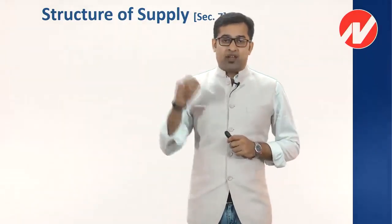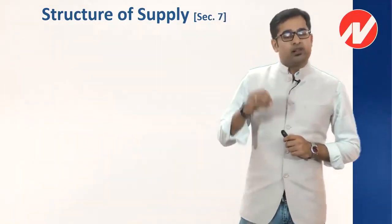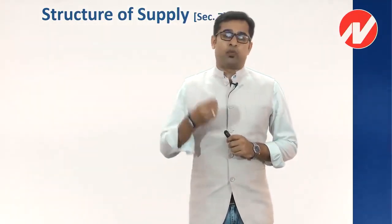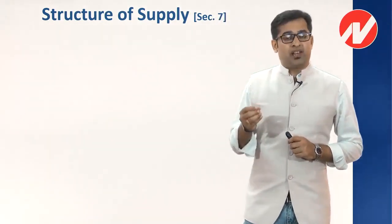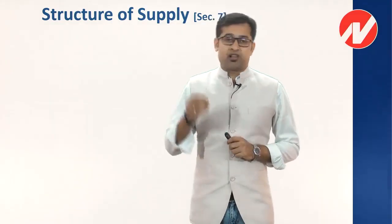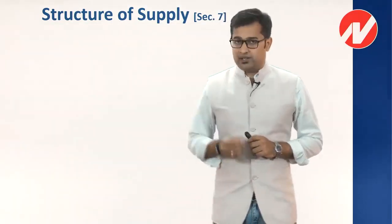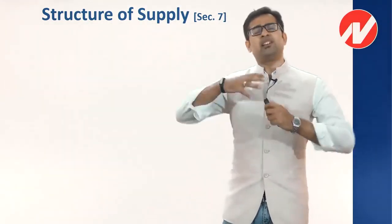Each tax had its own taxable event. For example, central excise — the taxable event was production or manufacture of goods. Service tax was applicable when someone provides services. VAT was applicable when you make a purchase or sale of goods within the same state. Central sales tax applied to interstate purchase or sale of goods. Each tax had its own taxable event.